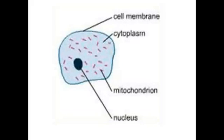First, let's look at animal cells as they are the simplest. Every animal cell except for red blood cells has a nucleus within it. The nucleus stores the DNA and so controls the activities of the cell. The cell is surrounded by a cell membrane, which acts like a bag, keeping the cell contents inside and controlling which substances can enter or leave the cell.